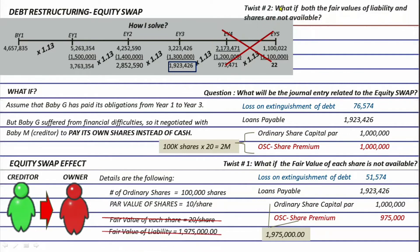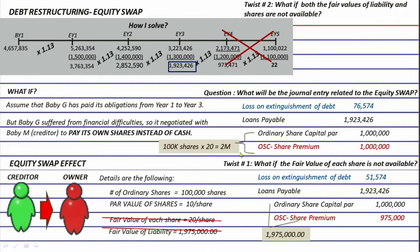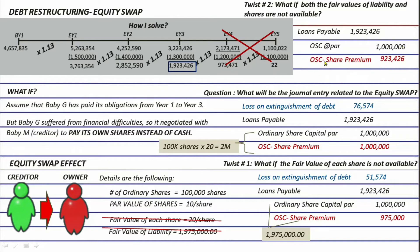Twist number two: what if no fair values are available — neither the fair value of the liability nor the fair value of the shares? You can still debit loans payable for 1,923,426, credit ordinary share capital at par value for 1 million, and credit share premium as the balancing figure of 923,426. In this case, there is no entry for loss or gain on extinguishment of debt.